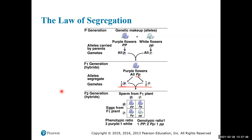Remember these ratios: the phenotypic ratio is 3:1 and the genotypic ratio is 1:2:1 for a monohybrid cross — a cross involving only one character. We can do crosses involving two, three, four, or more characters, but the math gets extremely complicated. The simplest case is the monohybrid cross shown here.